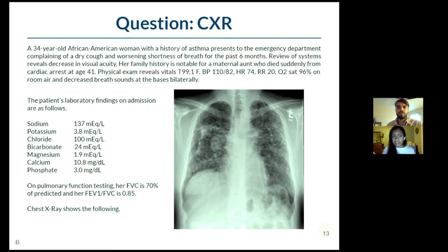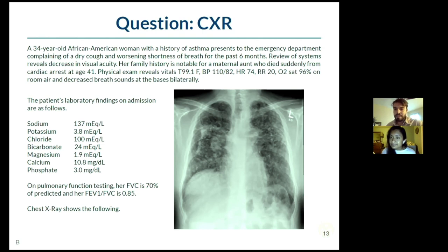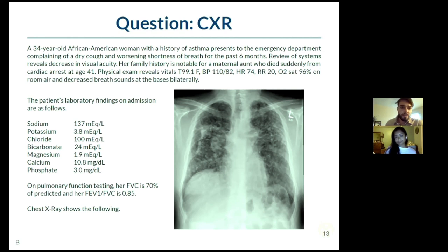Just to loop back on the vitamin D from the question: in sarcoid, the increased ACE levels in the lungs will lead to increased vitamin D activation, which leads to hypercalcemia. The upper limit of normal for calcium is 10.2; here it is 10.8 - so mildly hypercalcemic.